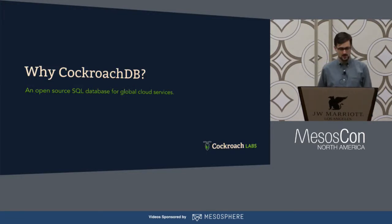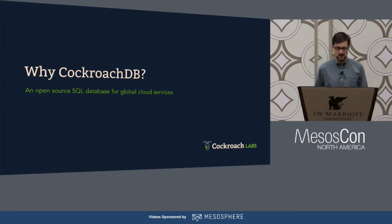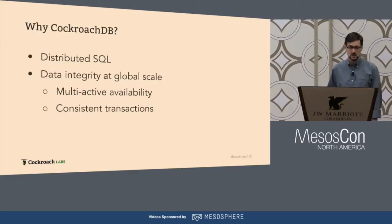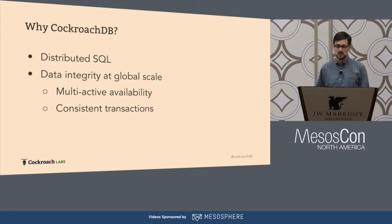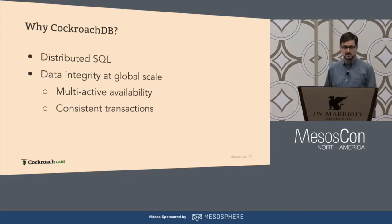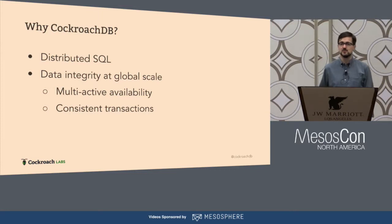Before I go into demonstrating this package, let me tell you a little bit more about CockroachDB and what it can do for you. CockroachDB is an open-source SQL database for global cloud services. The key things it provides are distributed SQL — so you can use the SQL language and your existing tools across a large pool of resources — and data integrity at global scale, which means high availability, or multi-active availability as we call it. The entire system is built on consistent transactions and consistent replication.